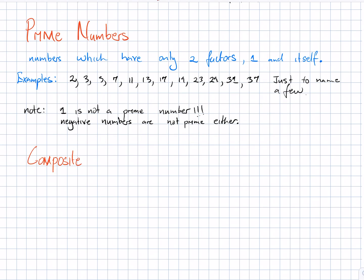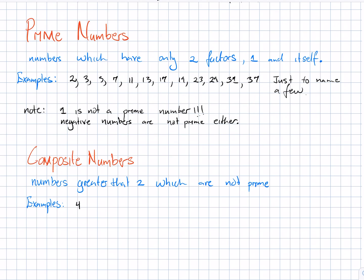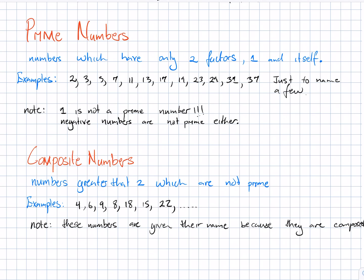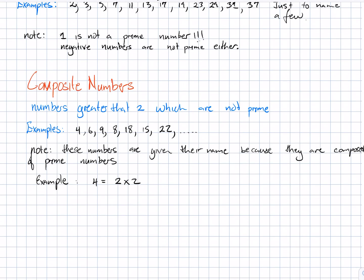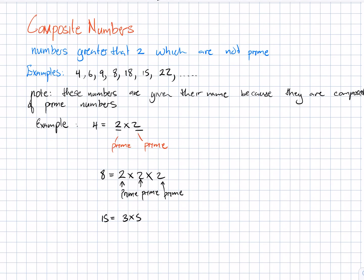The next set of numbers are composite numbers. These are whole numbers which are greater than 2 but are not prime. Examples include 4, 6, 9, 8, 18, 15, 22, and so on. These numbers are called composite because they are composed of prime numbers. For example, 4 = 2 × 2, and 8 = 2 × 2 × 2, and 15 = 3 × 5 — all factors being prime.